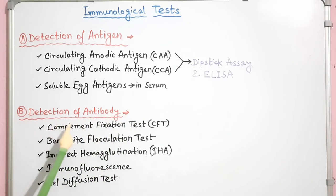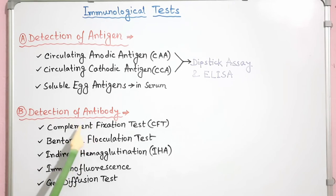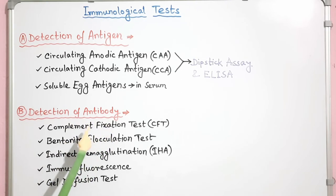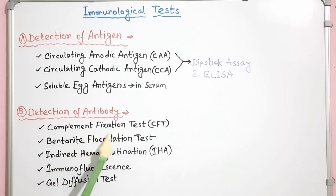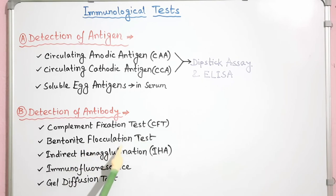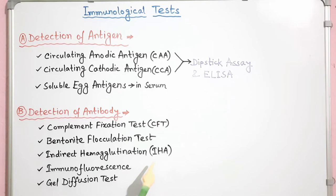Detection of Antibody: Several serological tests have been described for detection of specific antibody. These include complement fixation test (CFT), bentonite flocculation test, indirect hemagglutination (IHA), immunofluorescence, and gel diffusion tests.